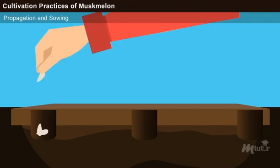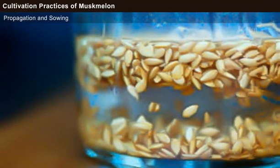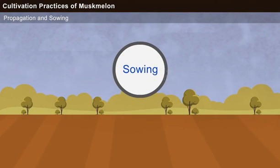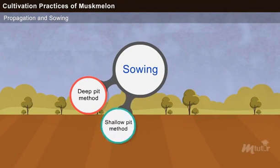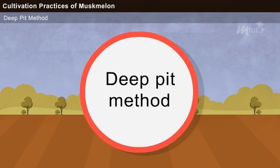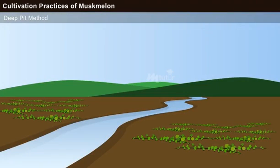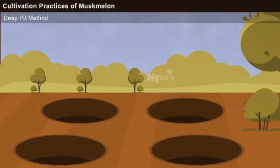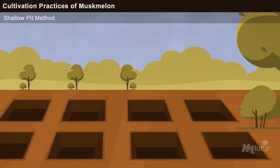Propagation and Sowing. Normally, the seeds are soaked in water for about 12 to 24 hours for better germination. The sowing can be done by following any of the four methods: deep pit method, shallow pit method, mount method and ridge method. Deep pit method: This method is preferred for riverbed sowing. Circular pits with a depth of 1 to 1.5 meters and diameter of 60 to 70 cm are dug, with inter-row and intra-row spacing of 1.6 to 2.5 meters respectively.